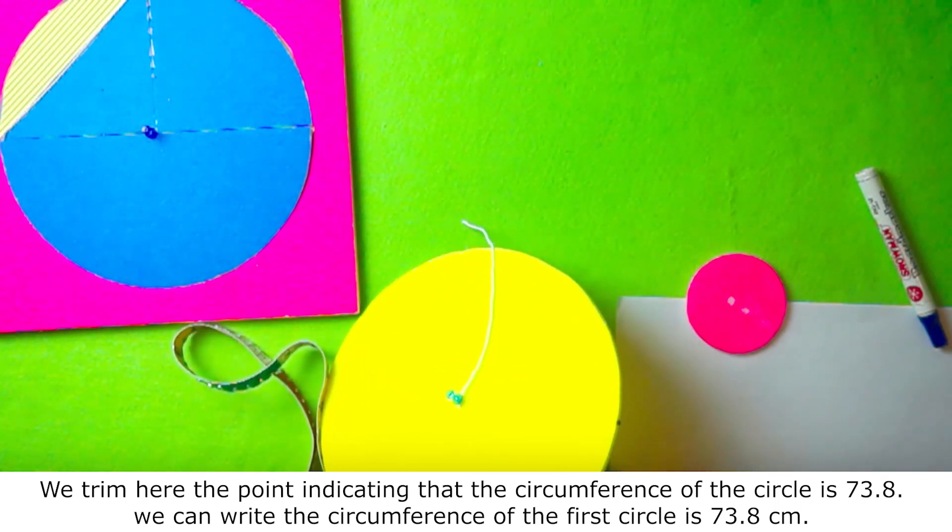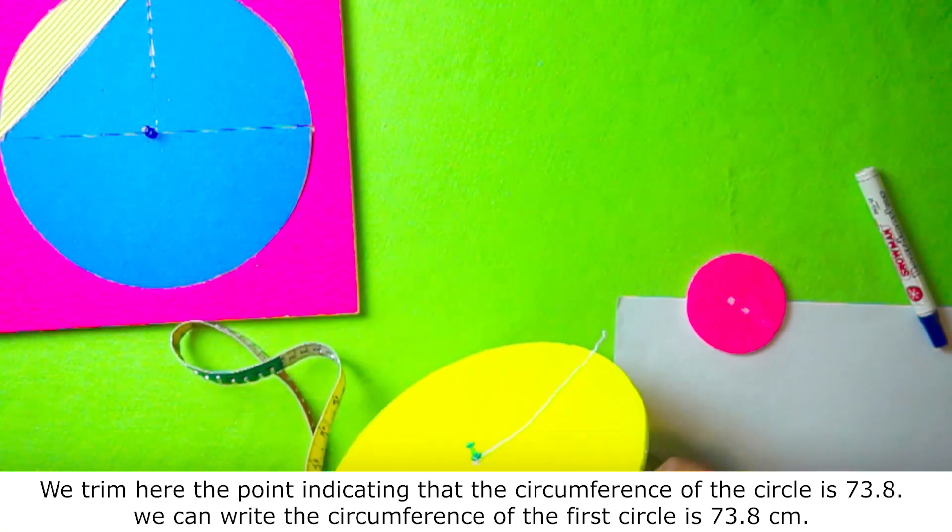We can write the circumference of the first circle is 73.8 cm.